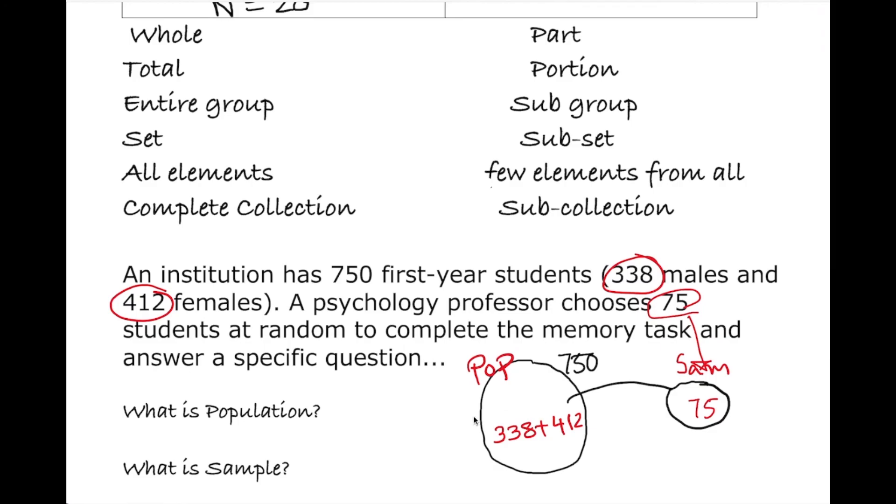What we understood, what is the population in this case? Population is going to be 750 students. And what is the sample size, it's going to be 75 is the sample size. Thank you.